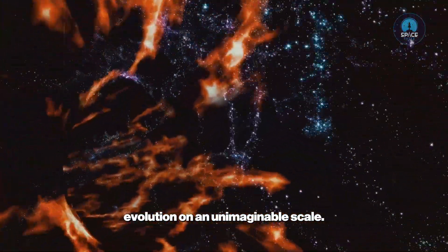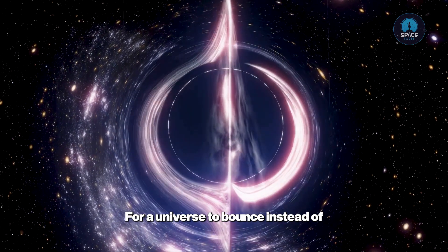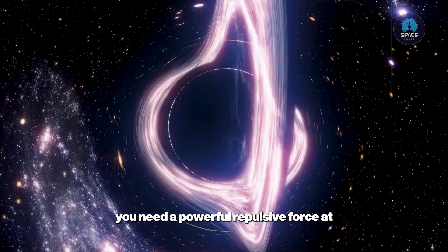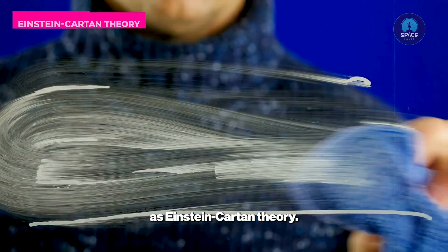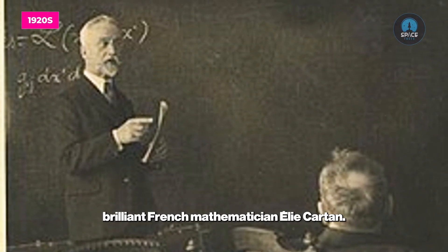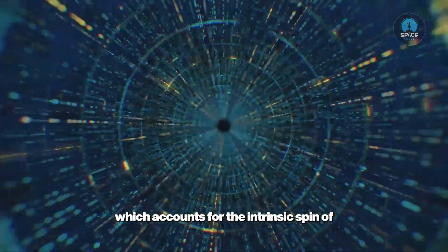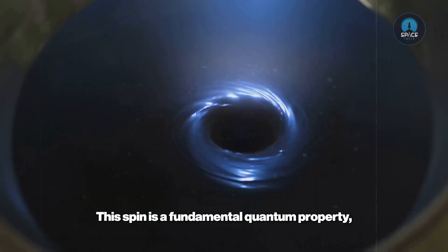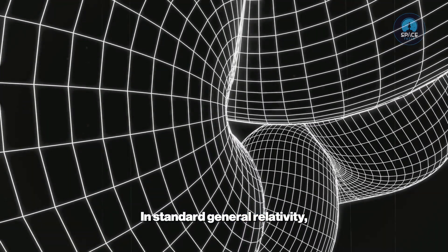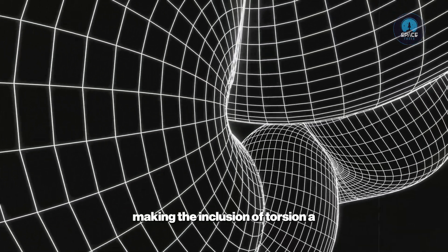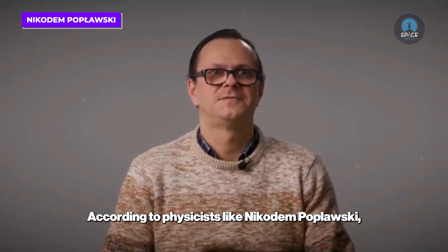Torsion and space-time twisting: For a universe to bounce instead of collapsing into a singularity, you need a powerful repulsive force at extreme densities. One candidate for this force comes from an extension of general relativity known as Einstein-Cartan theory. The mathematics behind this were developed in the 1920s by the brilliant French mathematician Élie Cartan. This theory incorporates a property of space-time called torsion, which accounts for the intrinsic spin of fundamental particles. This spin is a fundamental quantum property, like mass or charge, that gives particles an inherent angular momentum. In standard general relativity, space-time can bend but it cannot twist, making the inclusion of torsion a significant modification needed for this theory to work.